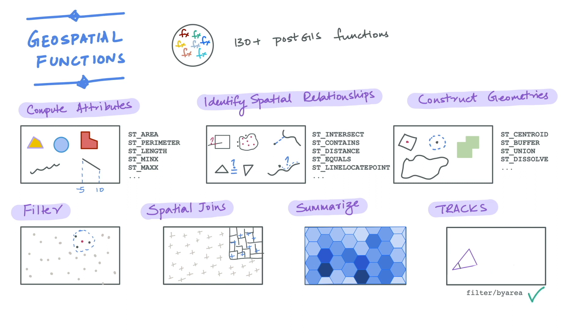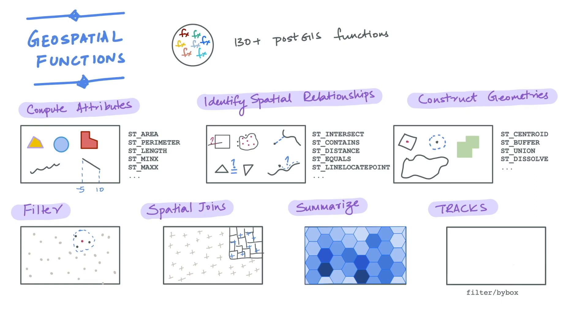The next endpoint that can be used is filter by box. This is the same as filter by area, except that it works on a provided rectangular region.